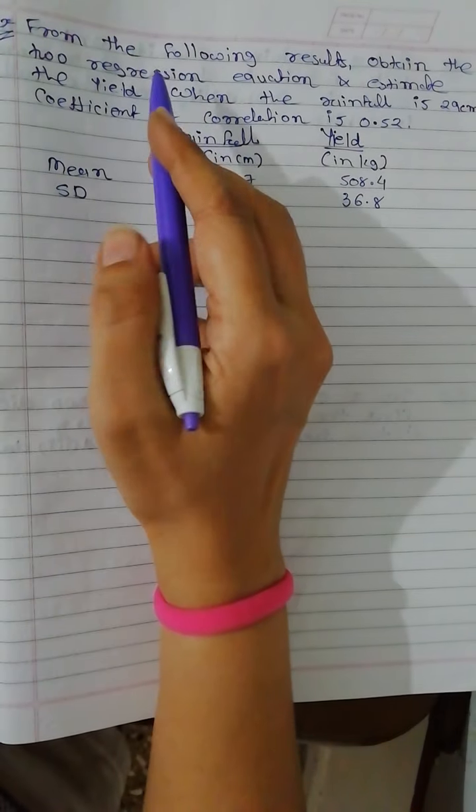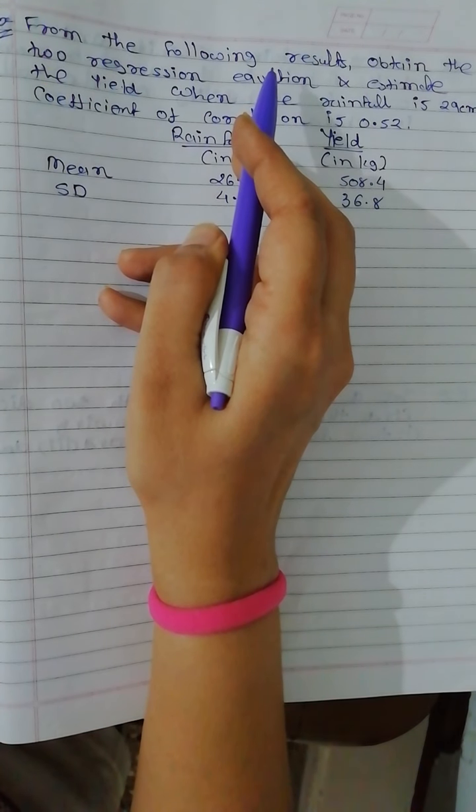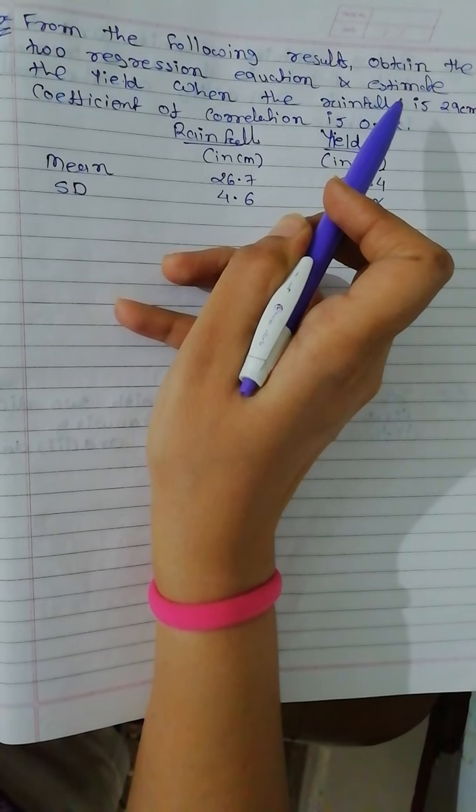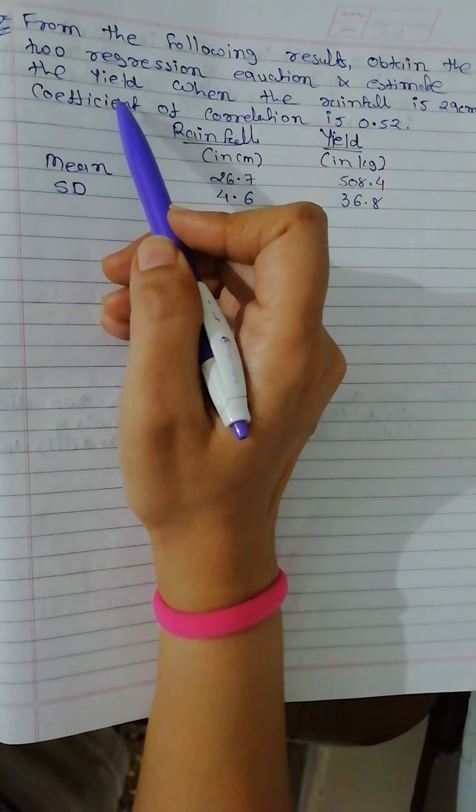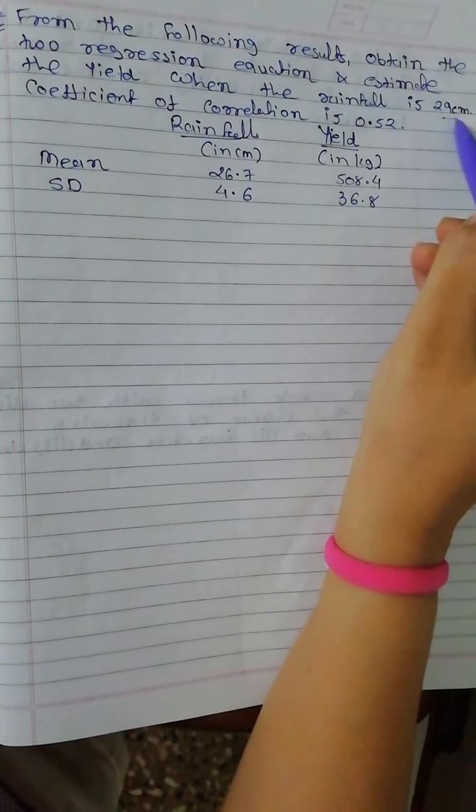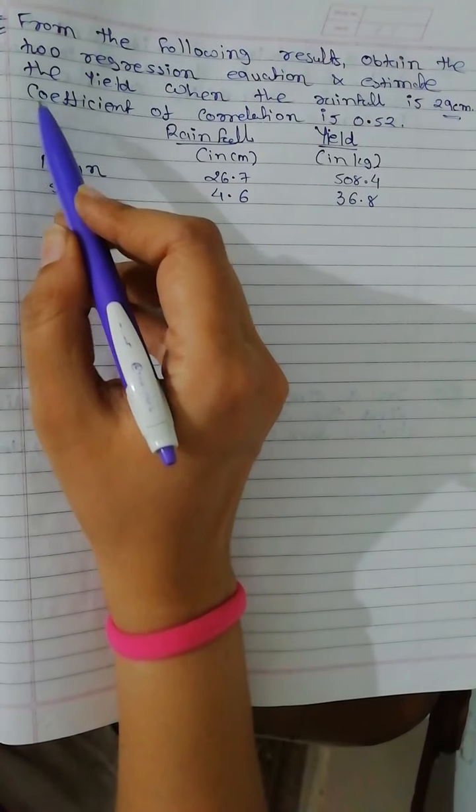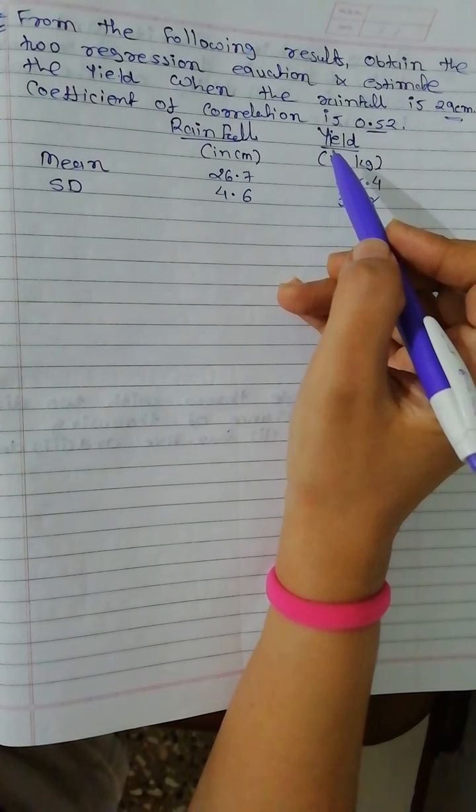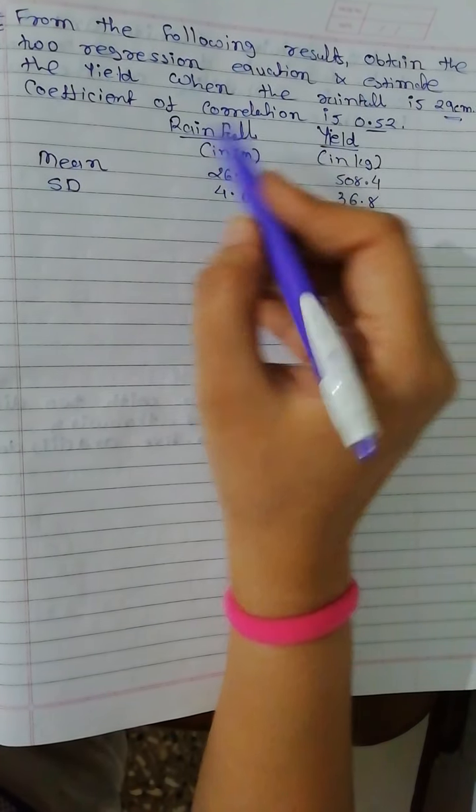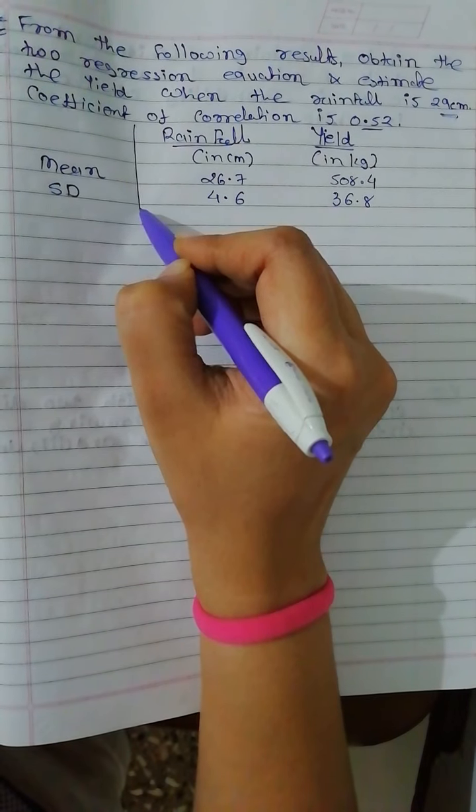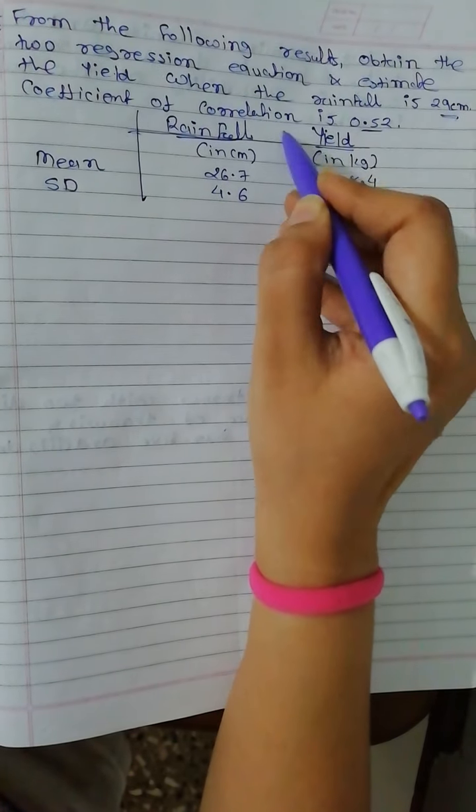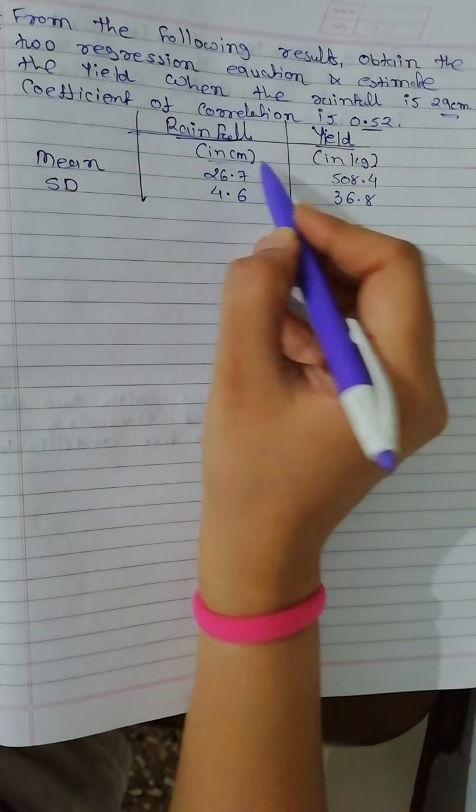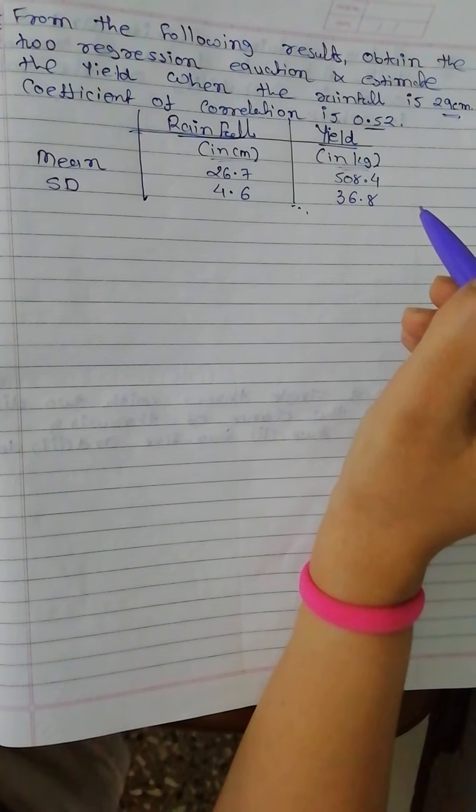The question is: from the following result, obtain the two regression equations and estimate the yield when the rainfall is 29 cm and coefficient of correlation is 0.52. In the question, the rainfall in cm and yield in kg are given.